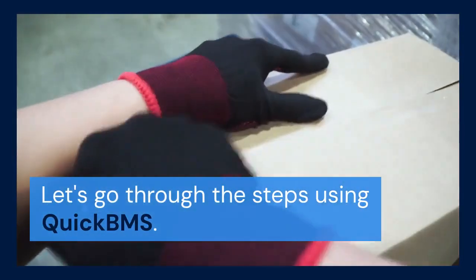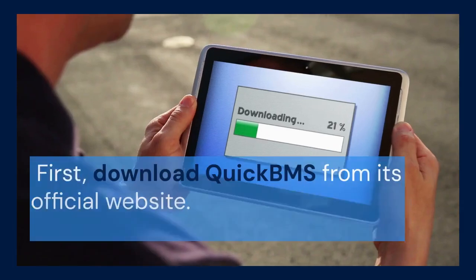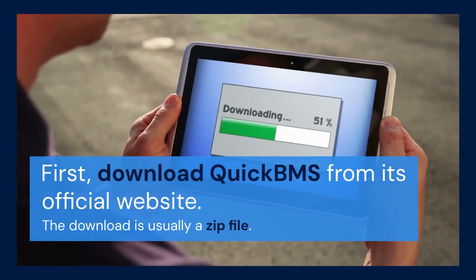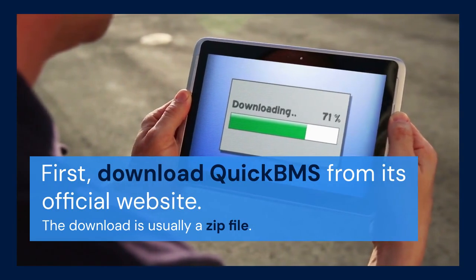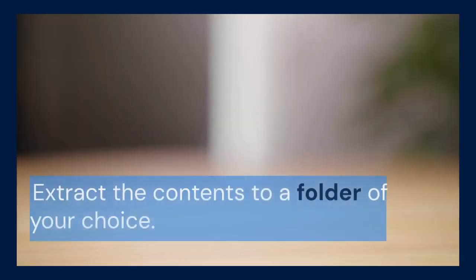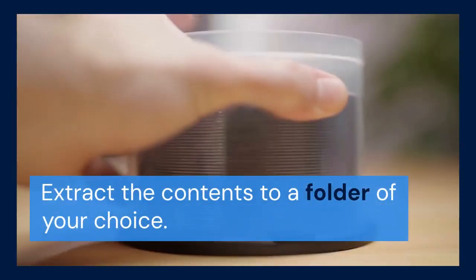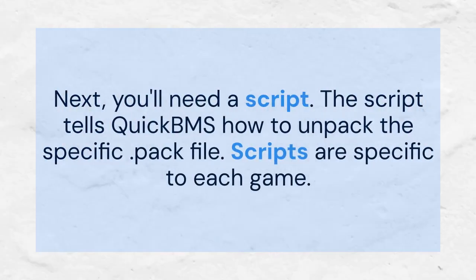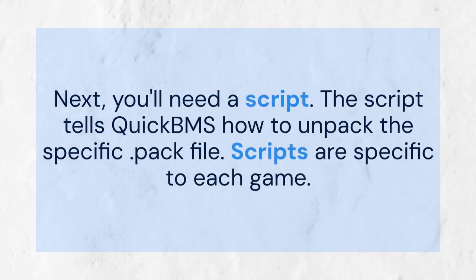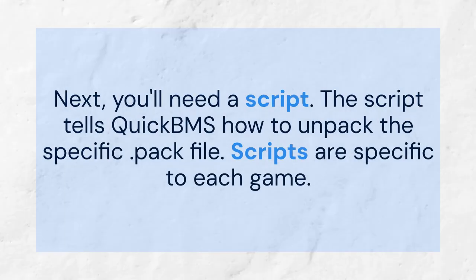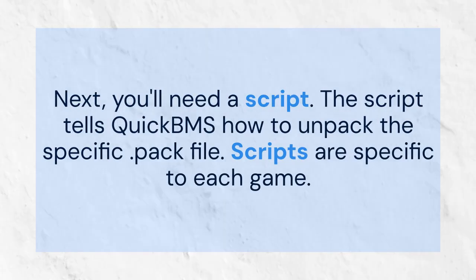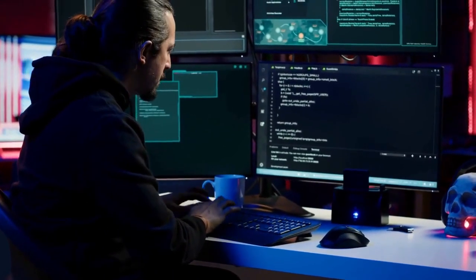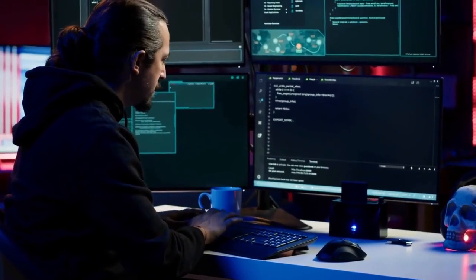Let's go through the steps using QuickBMS. First, download QuickBMS from its official website — the download is usually a zip file. Extract the contents to a folder of your choice. Next, you'll need a script. The script tells QuickBMS how to unpack the specific .pac file. Scripts are specific to each game, and you can usually find them on the QuickBMS website or in game modding communities.